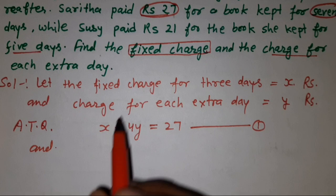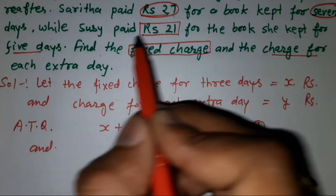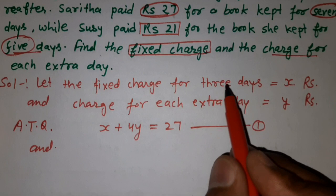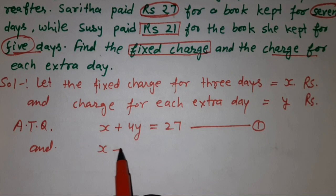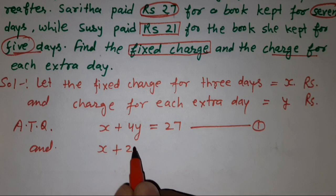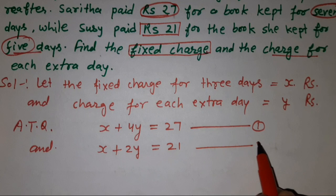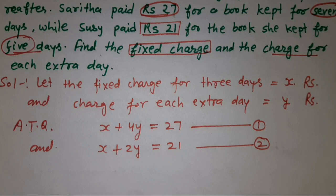Sushi paid 21 rupees for 5 days। पहले 3 days fix हो गए तो x rupees। 5 में से 3 minus करेंगे तो 2 extra days बचे, so 2y। Total paid = 21, so equation 2: x + 2y = 21।